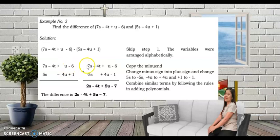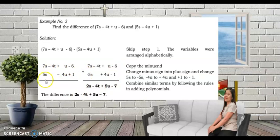The minus sign here is changed to plus; 5s becomes minus 5s, and minus 4 becomes plus 4 (the constant term of the subtrahend).